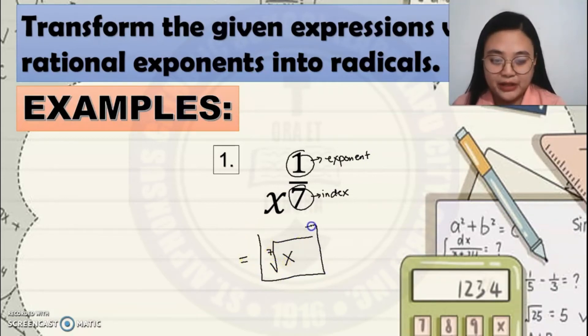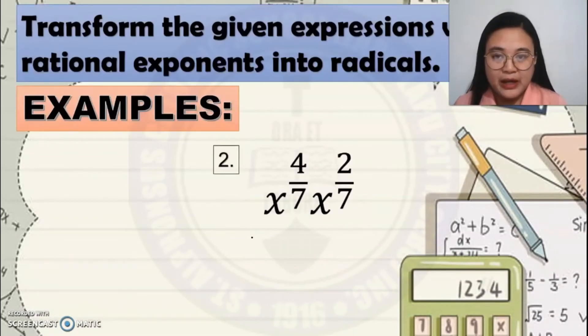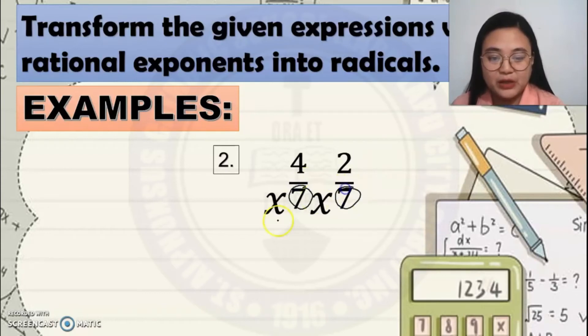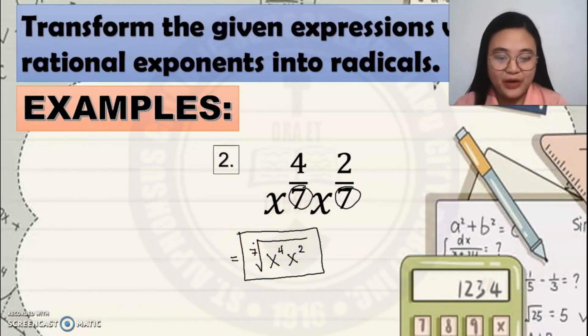Example number 2. Transform the given expression with rational exponents into radicals. As you have noticed, they have the same denominator of their exponents. So that would become the 7th root, that will become the index of the radical, and X to the 4th, X squared. That would be the final answer. Very easy.